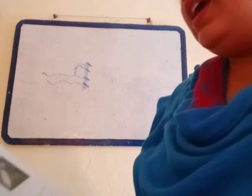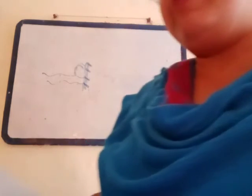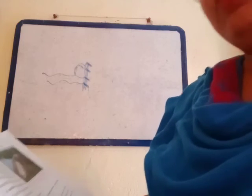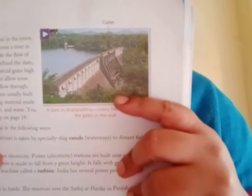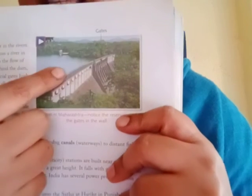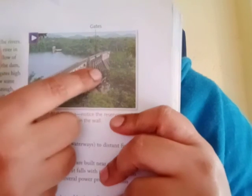Dams are usually built of concrete — a strong building material made of broken stone, sand, cement, and water. You can see some dams on the map on page number 19. Here is a picture of a dam. You can see the gates of the dam and behind it is the reservoir.